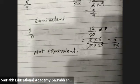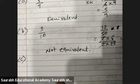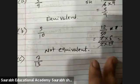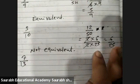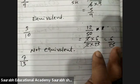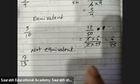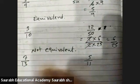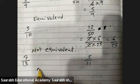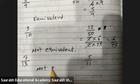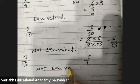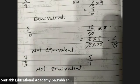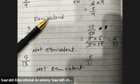Third question, C. Seven upon thirteen and five by eleven. Both are not reducible. We cannot reduce them, so not equivalent. Clear? Thank you.